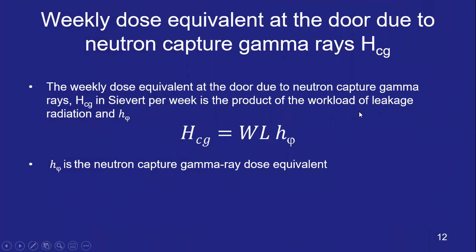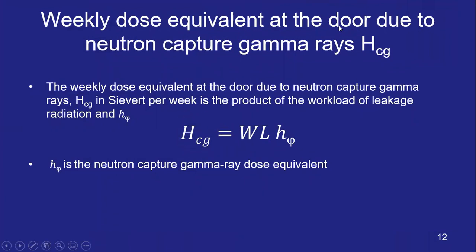Once H_phi is calculated, the weekly dose equivalent at the door due to neutron capture gamma rays, H_CG, can be determined. H_phi is the dose equivalent at the door per unit dose, but H_CG is the actual weekly dose equivalent. H_CG is the product of the leakage workload W_L and the dose equivalent at the outer maze entrance H_phi. So H_CG equals W_L multiplied by H_phi.